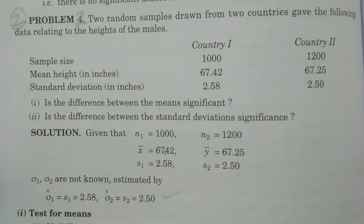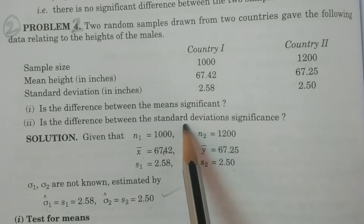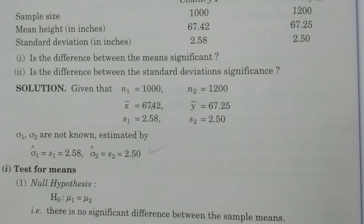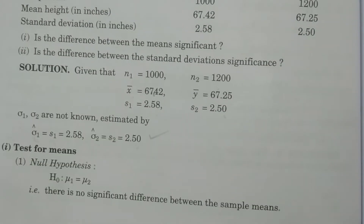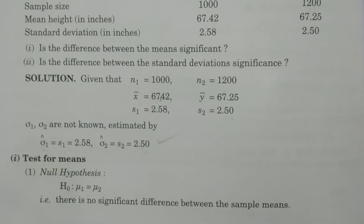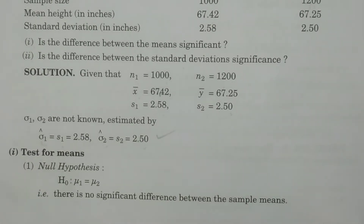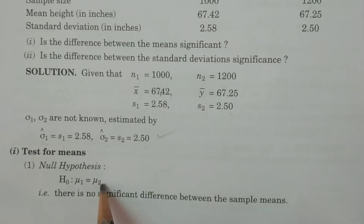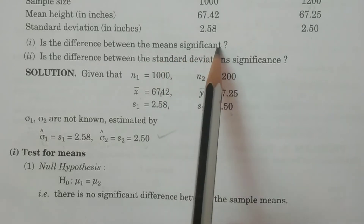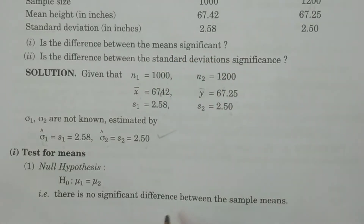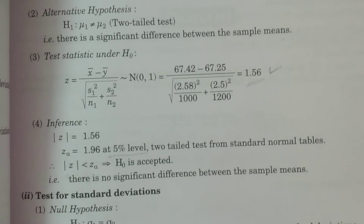First test: test for means. The first point is the null hypothesis. H0: mu 1 is equal to mu 2, meaning there is no significant difference between the means. The question asks if the difference between means is significant. The alternative hypothesis H1: mu 1 is not equal to mu 2, meaning there is a significant difference between the means — this is a two-tailed test.